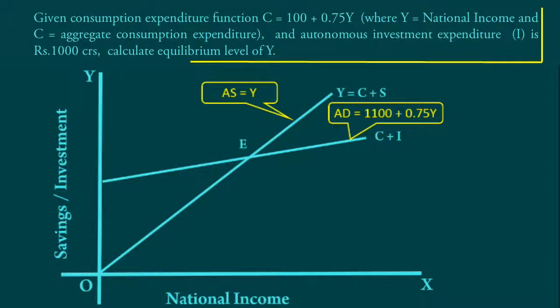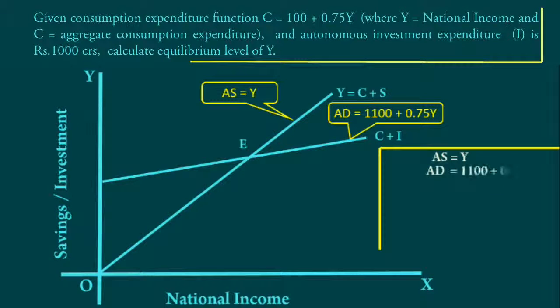After deriving the two functions, we shall go ahead with the calculations. Aggregate Supply Function is AS = Y. Aggregate Demand Function is AD = 1100 + 0.75Y. Equilibrium condition is Aggregate Supply equals Aggregate Demand.